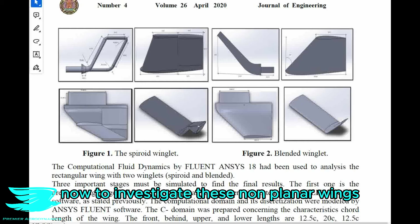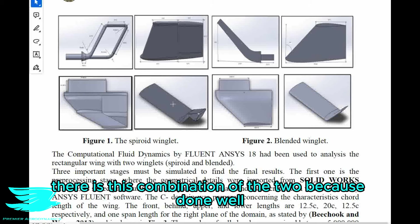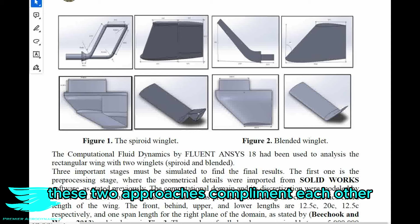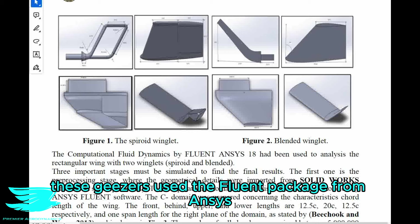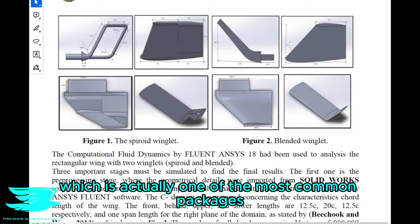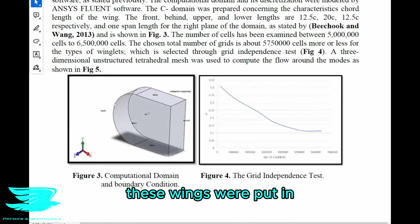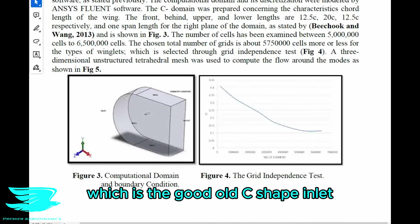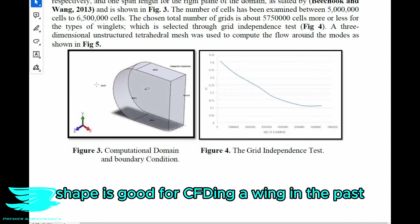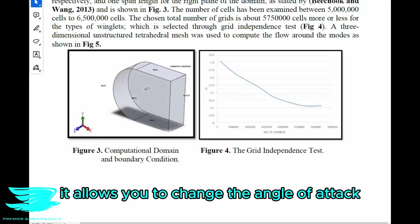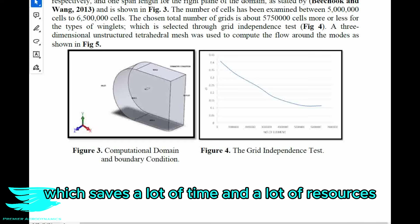To investigate these non-planar wings, these authors did CFD and experiments, which I really like when there is this combination of the two because, done well, these two approaches complement each other. For the CFD, these guys used the Fluent package from ANSYS, which is actually one of the most common packages — probably the most common. In figure 3, we see the domain these wings were put in, which is the good old C-shape inlet. It allows you to change the angle of attack of the wing without having to remesh it, which saves a lot of time and resources.